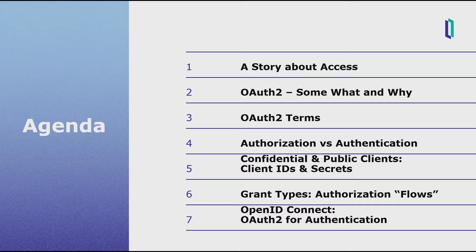We'll spend this session going over these things. First, I'm going to tell you a story about access. Then I'm going to explain the term OAuth 2.0 itself and some general things about it. Then we're going to review OAuth 2.0 terminology. We're going to discuss authorization versus authentication. Then we'll cover confidential and public clients and client IDs and secrets. With that in mind, we'll talk about the different grant types, which are authorization flows in OAuth 2.0. And we'll briefly touch on OpenID Connect, which is an extension to OAuth 2.0 used for authentication rather than authorization.